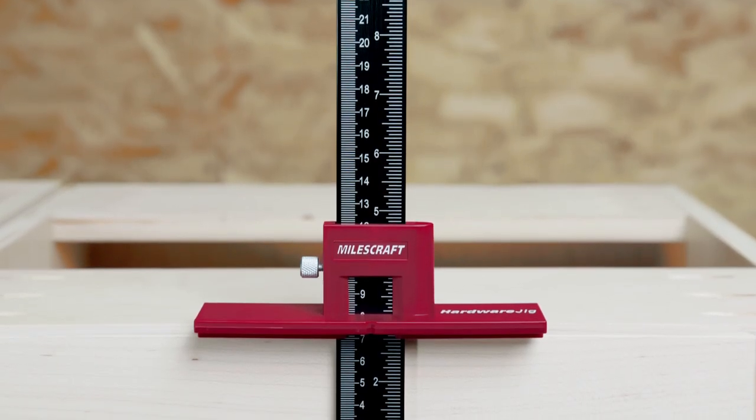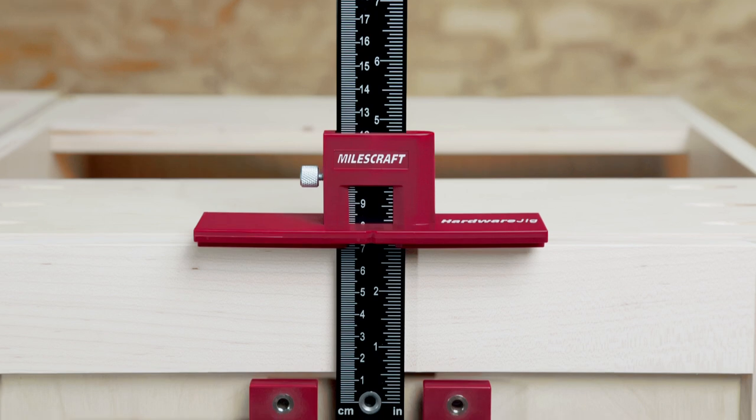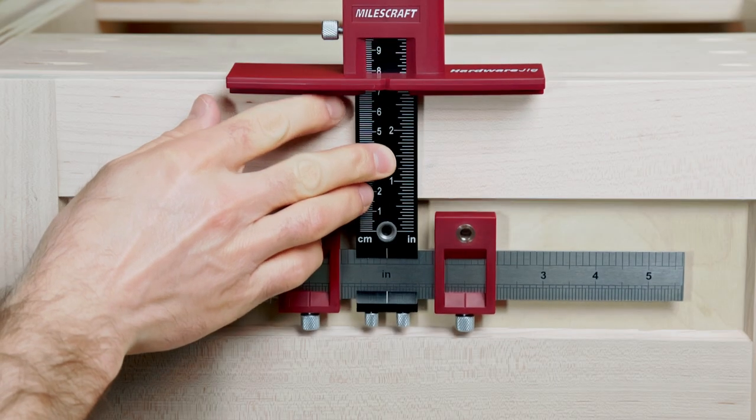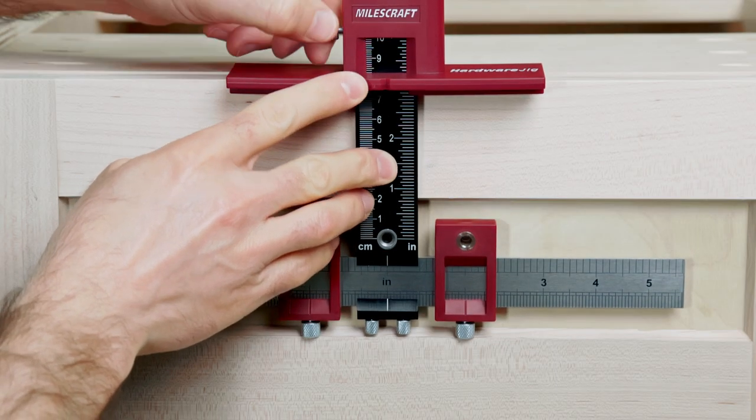The metal ruler construction offers precise measurements in both imperial and metric, and the steel bushings ensure accurately drilled holes on doors and drawer fronts.